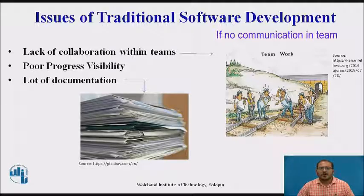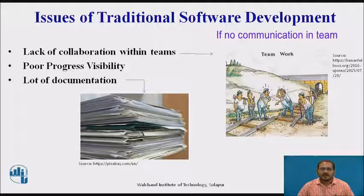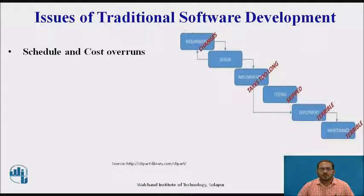Poor progress tracking of development phases is one more issue. Another problem is the amount of documentation required: requirement specification documents, design documents, program documents, test plans, test cases, and configuration management documents — so many different documents need to be prepared for traditional development. Most people also complain about schedule and cost overruns, probably because of ambiguous requirements or requirement changes.